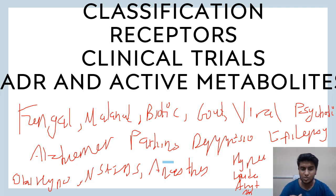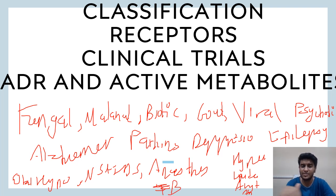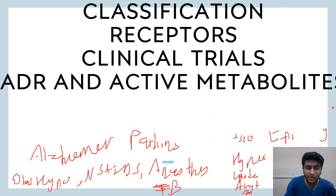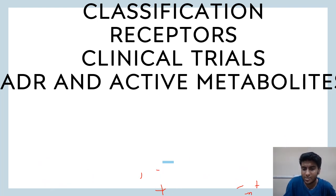For angina pectoris, know novel agents like ivabradine and ranolazine. These are the prime important drugs, though other categories are also important. Anti-TB drugs are also very important — first-line agents are pyrazinamide, rifampicin, isoniazid, streptomycin, and ethambutol. You should know their adverse effects, including: gray baby syndrome, floppy baby, red man syndrome, blue baby, cardiotoxicity, nephrotoxicity, neuromuscular blockage, agranulocytosis, and malignant hyperthermia.